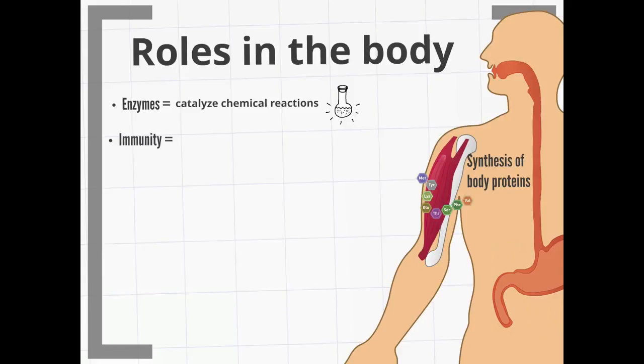Immunity. Proteins can be antibodies which are involved in identifying antigens, foreign invaders. Hormonal proteins are messenger proteins, which help to coordinate certain bodily activities, for example, insulin, which regulates glucose metabolism.